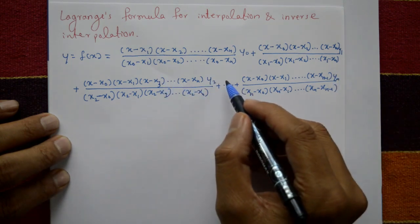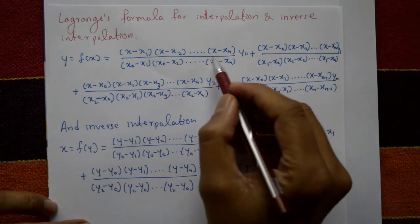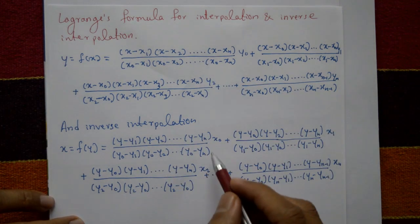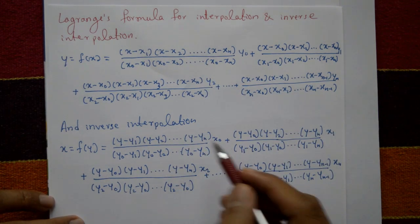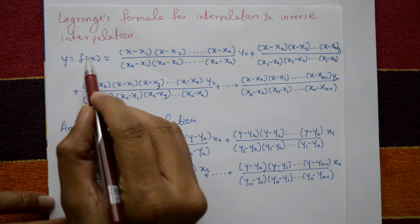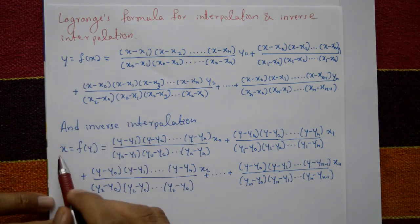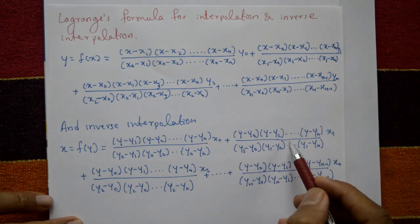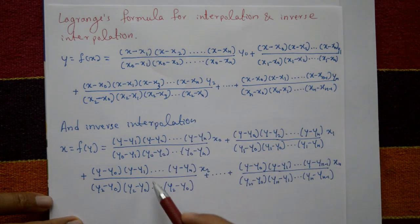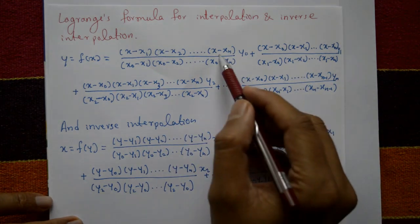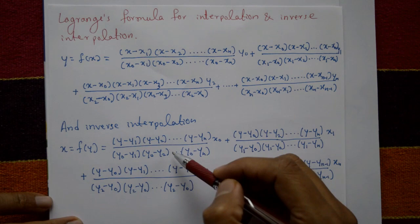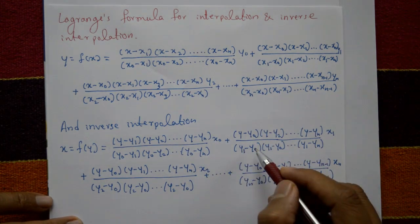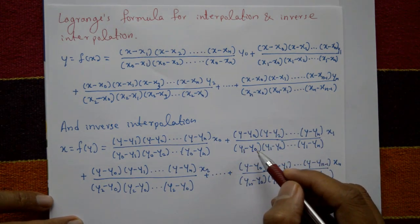This is Lagrange's interpolation formula. For the inverse Lagrange interpolation formula, note that the first form is y equals f of x, while the inverse is x equals f of y. To get the inverse Lagrange interpolation formula, simply replace x with y and y with x in each term.